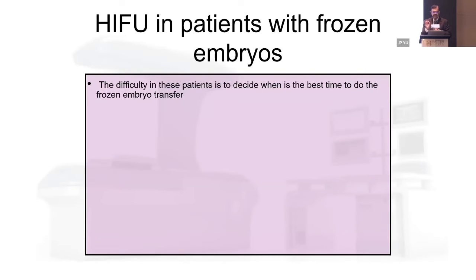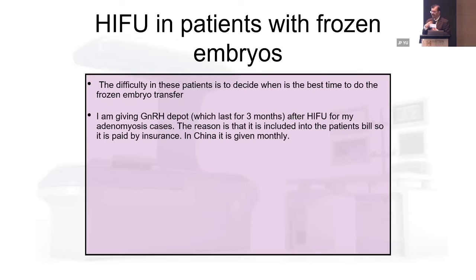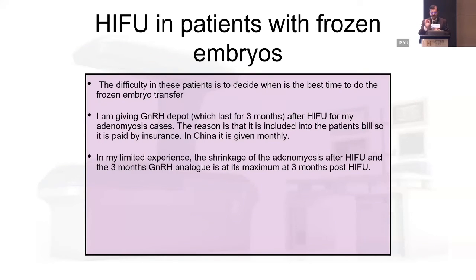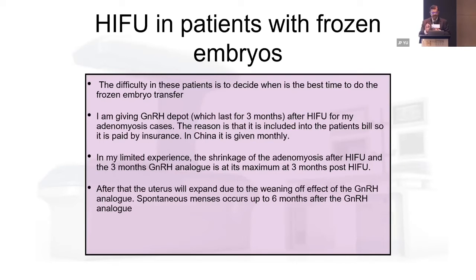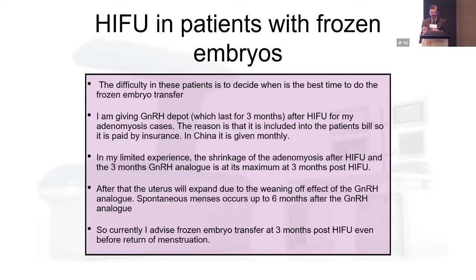For IVF patients with frozen embryos, the difficulty is deciding when is the best time for frozen embryo transfer. Nobody at Chongqing is very sure. In my practice, I give GnRH analog for three months post-HIFU for every adenomyosis patient. My follow-up shows the uterus is smallest at three to four months after treatment. After that, the GnRH analog wears off and the non-ablated area may grow back. I am currently performing frozen embryo transfer at three months post-HIFU.